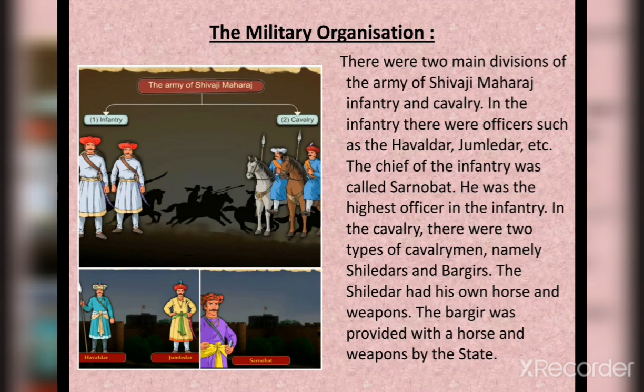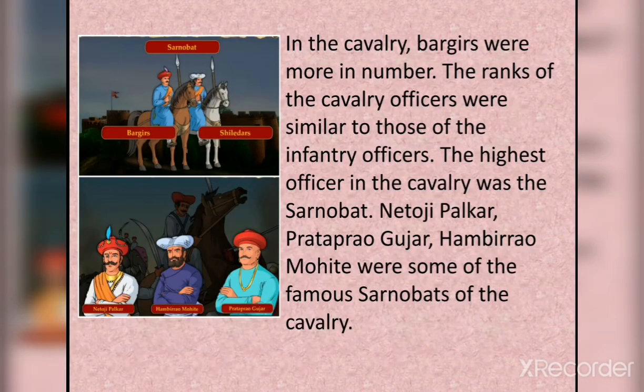In the cavalry there were two types of cavalrymen: Shiladas and Bargis. The Shiladas had his own horse and weapons; the Bargis was provided with a horse and weapons by the state. Bargis were more in number. The ranks of cavalry officers were similar to those of infantry officers. The highest officer in the cavalry was Sarnobat. Netoji Palkar, Pratap Rao Gujar, and Hambir Rao Mohite were some of the famous Sarnobats of the cavalry.